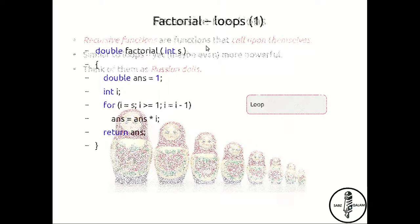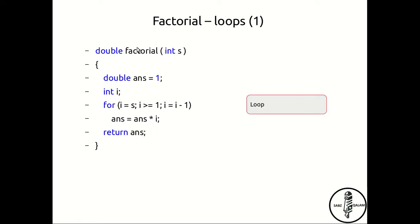Here is an example of a factorial function — an iterative version — where we want to find out the factorial of s. So you are going to start with s and decrement: it is going to be s, then s minus 1, then s minus 2, all the way till it reaches 1, and then it is going to stop. That is why there is a greater than or equal to operator in the loop condition.